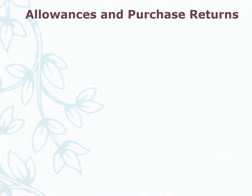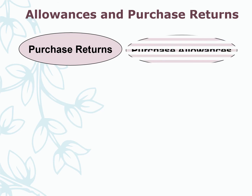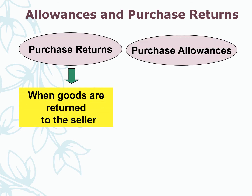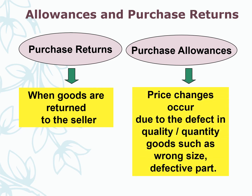Allowances and purchase return. What is the difference between allowances and return? Purchase return means when goods are returned to the seller. But purchase allowance means there are no goods returned to the seller — instead, a price change occurs due to a defect in quality or quantity, such as wrong size or defective parts.